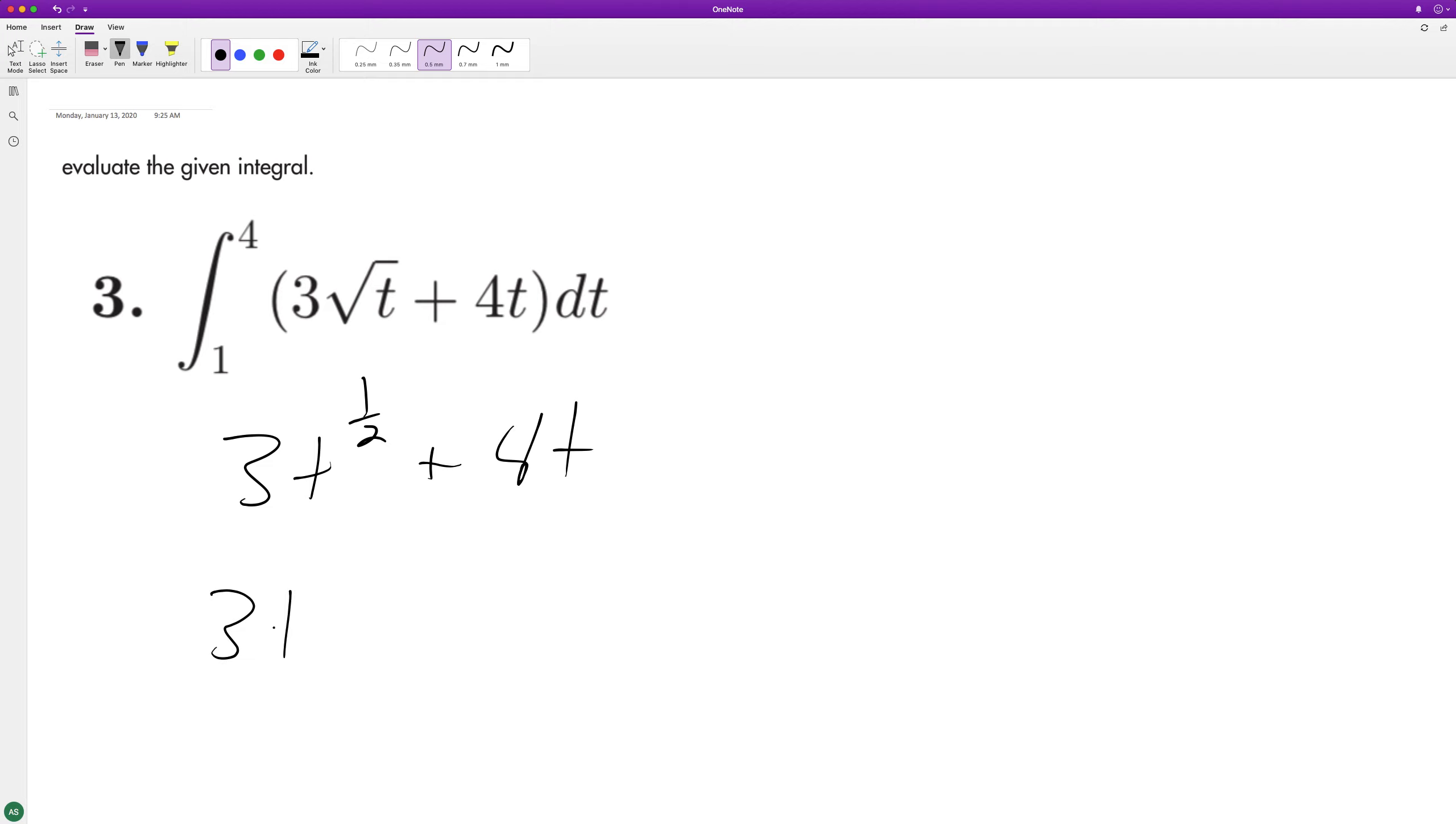So when we integrate this, we're going to get three T raised to the three halves divided by two, three halves, two thirds.